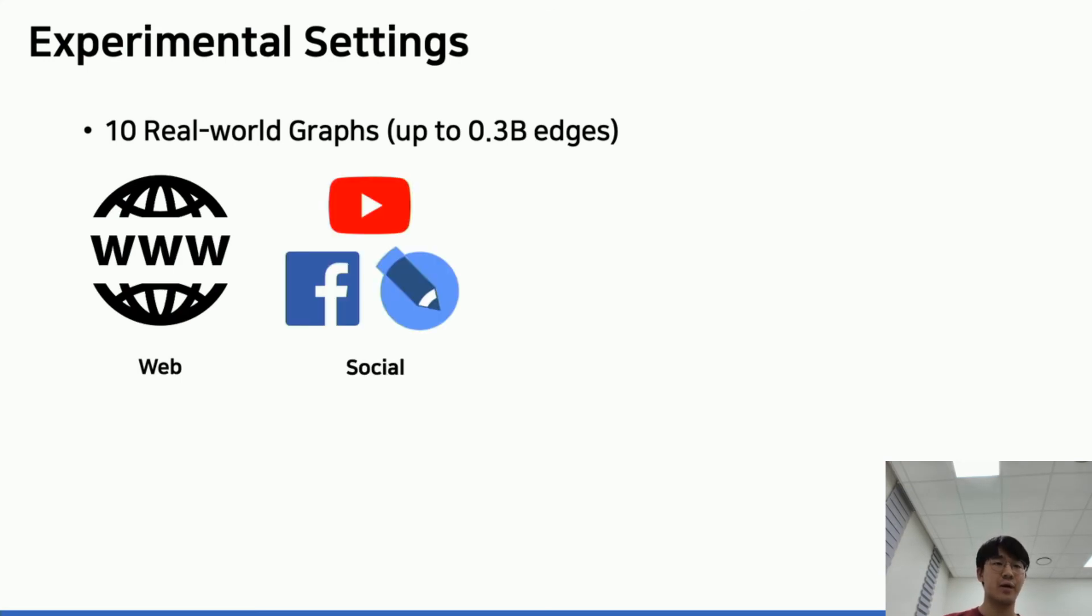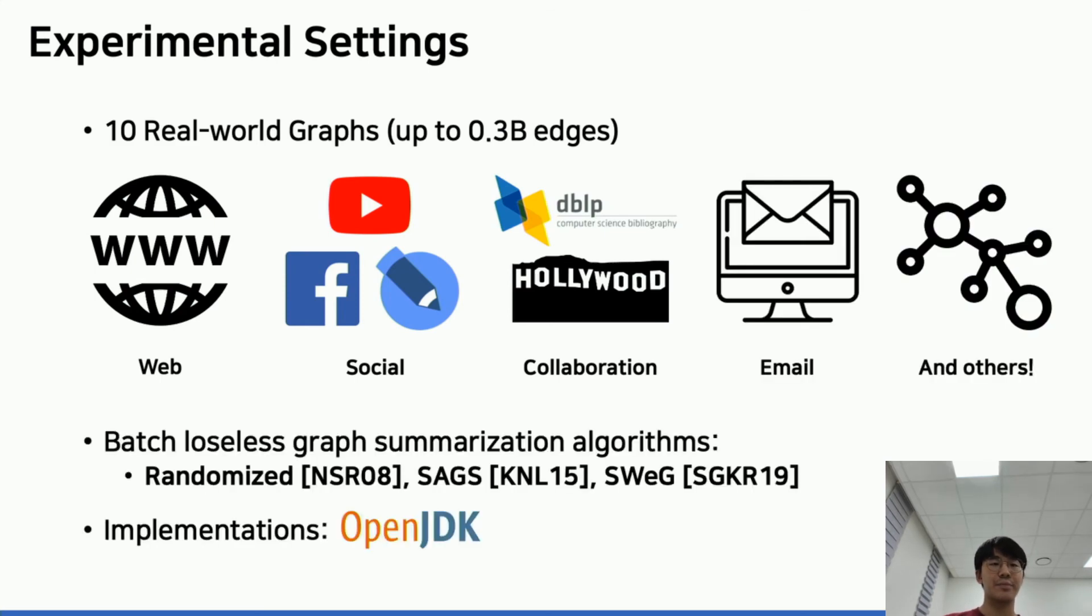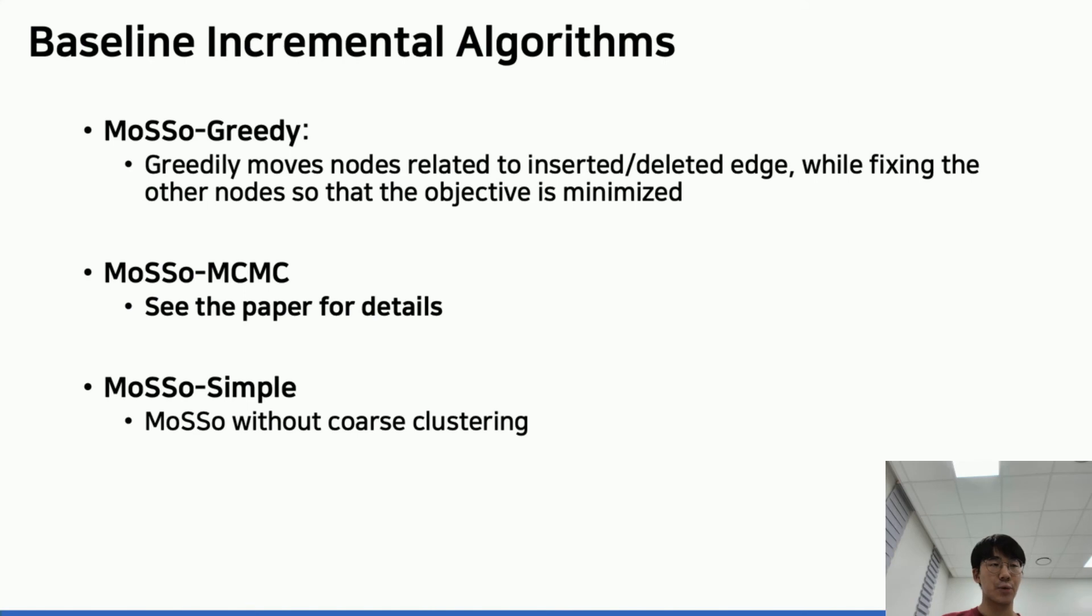Now, let's move on to experiment results on MoSso. We perform experiments on 10 real-world graphs up to 2.3 billion edges. We use datasets coming from web graphs, social graphs such as YouTube, Facebook, and LiveJournal, collaboration graphs, and email graphs as well. For competitors, we use batch lossless graph summarization algorithms: randomized SWeG, and SHS. Also, we compare MoSso with its variants: MoSsoGreedy, MoSsoMCMC, and MoSsoSimple as baseline incremental algorithms.